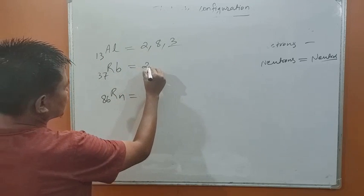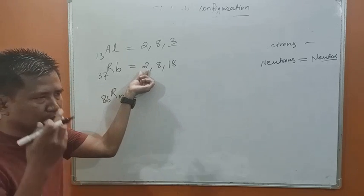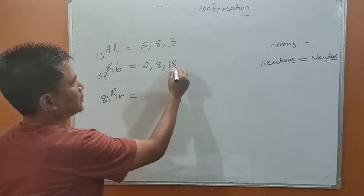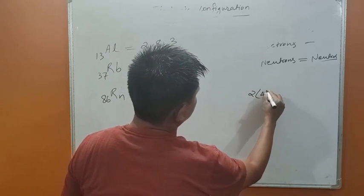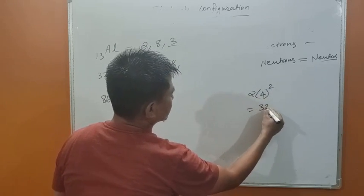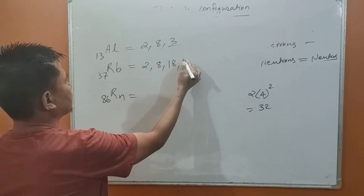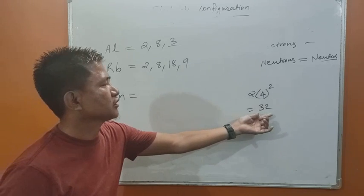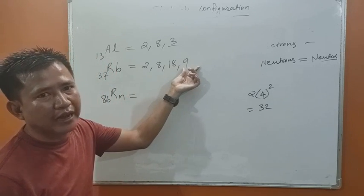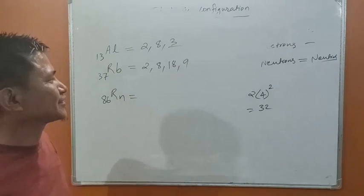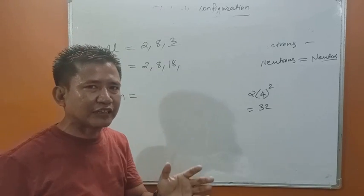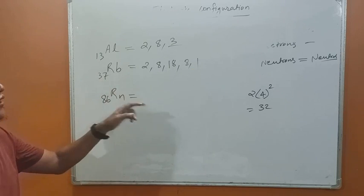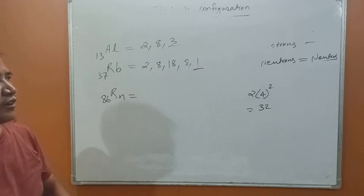For rubidium, atomic number 37: the first orbit holds 2, the second holds 8, and the third holds 18. That is 2 plus 8 plus 18 equals 28. The fourth orbit can hold up to 32 electrons, but we cannot put the remaining 9 electrons all in the outermost orbit directly, because the outermost orbit must contain 8 or fewer electrons. So we place 8 in the fourth orbit: 2 plus 8 plus 18 plus 8 is 36, plus 1 is 37. The outermost orbit contains only 1 electron.